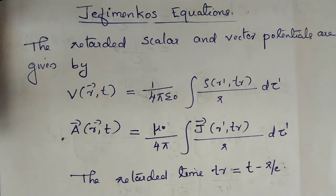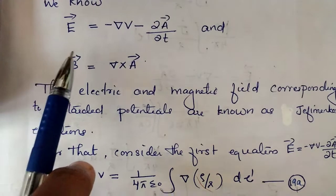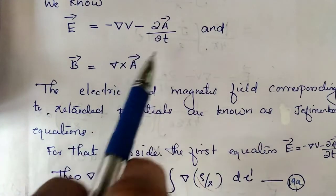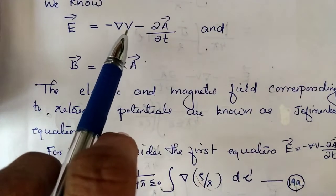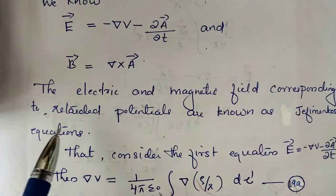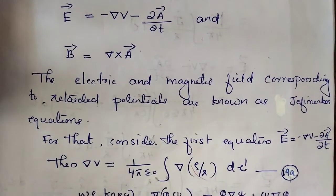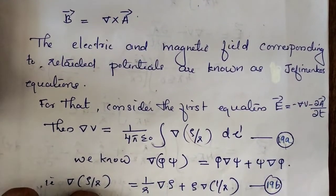This is Jefimenko's equations — the retarded scalar and vector potentials corresponding to electric field vector E and magnetic field vector B. We already know that the scalar and vector potentials give the electric and magnetic field vectors: vector E is equal to minus del V minus dou A by dou t, and vector B is equal to del cross A. We will now consider the first equation and calculate del V.